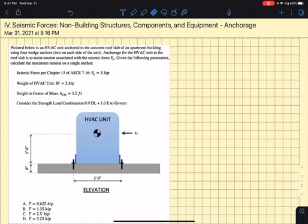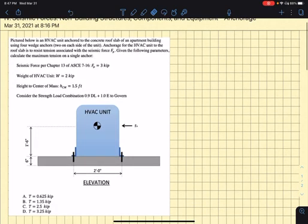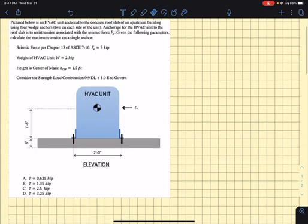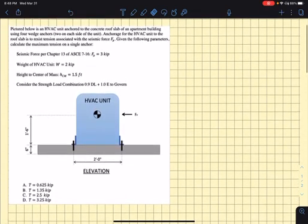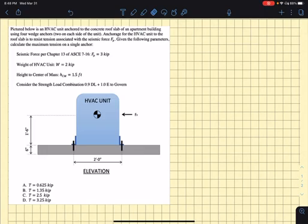So back to the problem. This specific problem falls under section 4 of the board's study plan for the seismic principles exam. The problem pertains to an HVAC unit which is anchored to a concrete roof slab on top of an apartment building. It's anchored with four wedge anchors, two on either side. The anchorage for the unit is meant to resist tension associated with the seismic force F_p. That seismic force F_p is calculated based on chapter 13 of ASCE 7-16, the non-structural component seismic force. It's given here in this problem statement, and we're just going to use that to design the anchor for the maximum tension.